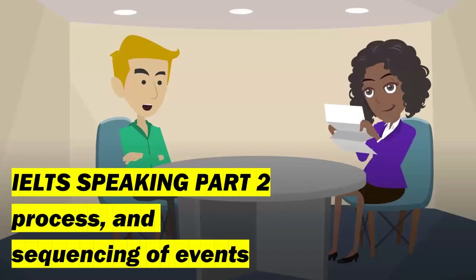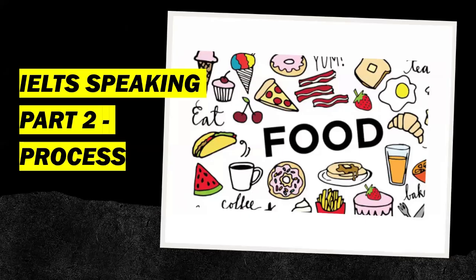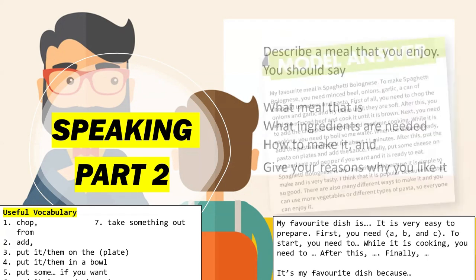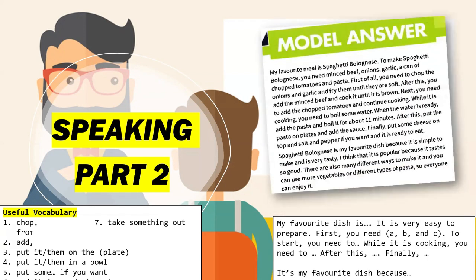For IELTS Speaking Part 2, there are questions that ask you to describe a process. For example, the process of preparing a meal. This is one of the most difficult types of questions in IELTS Speaking Part 2, because it asks you to describe certain steps. Here is an example answer that you can read.